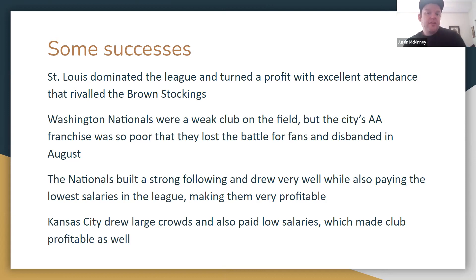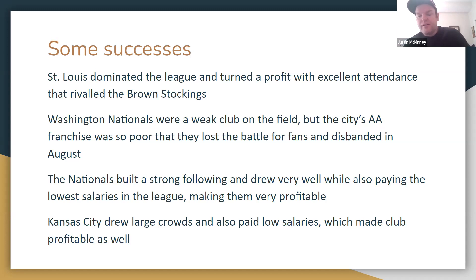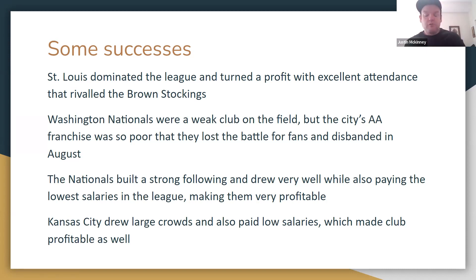Despite these failures there were some successes. St. Louis dominated the league and turned a profit, drawing excellent attendance to rival the St. Louis Brown Stockings — now the Cardinals — who had been one of the best-drawing teams in baseball and were on the verge of becoming a dynasty. The Washington Nationals were a weak club on the field, but the city's American Association franchise was so poor that it lost the battle for fans and disbanded in August — the Union Association actually won Washington in terms of fan support. Washington paid the lowest salaries in the league and reportedly made over $12,000 on the year.